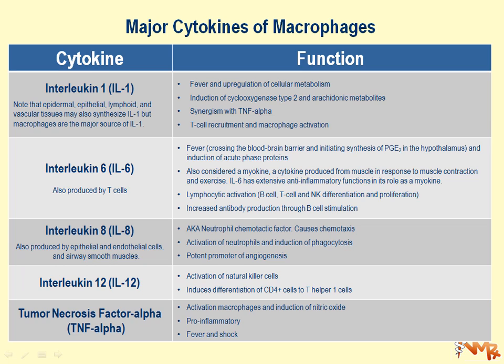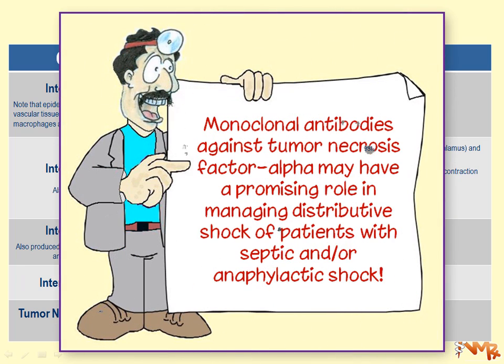A very high-yield and commonly tested fact is that uncontrolled production of tumor necrosis factor may cause shock. Bacteria that are able to produce superantigens may cause serious problems, including septic shock, which can be deadly. Lock in TNF-alpha as the pathophysiological cause of septic shock.